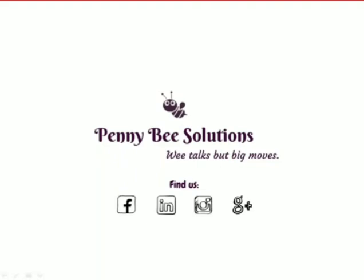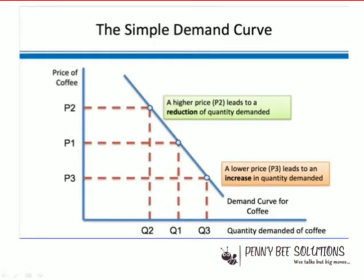We started with demand and supply, market equilibrium. We need this both in economics and business. You can see a sample of the demand curve. Demand is defined as the quantity of a product bought at a given price over a period of time — the quantity of a product that customers are likely to buy at a given price over a period of time.